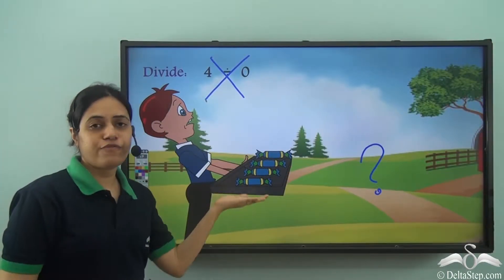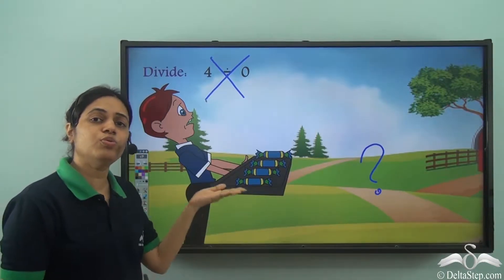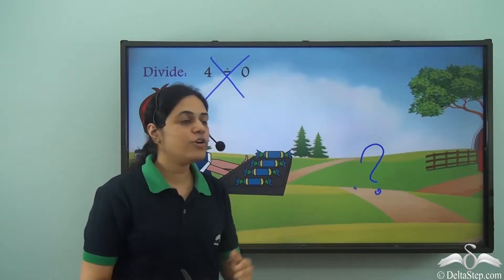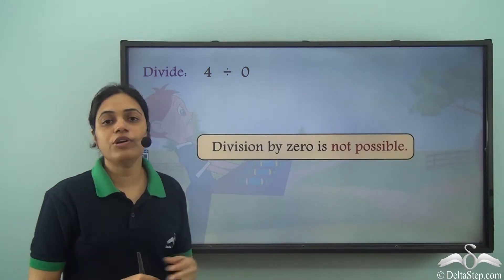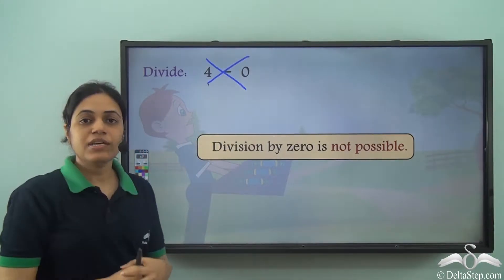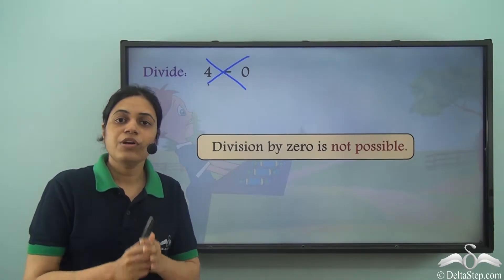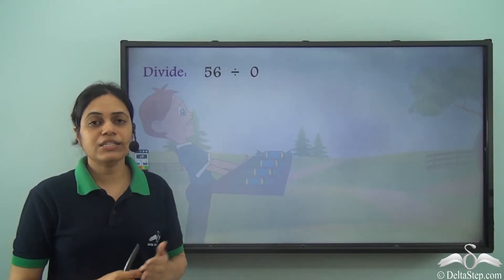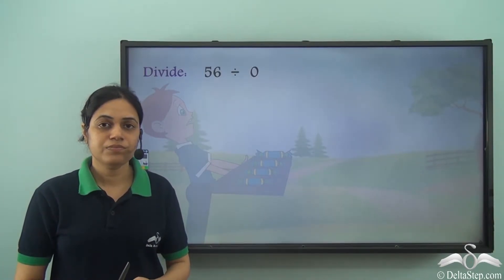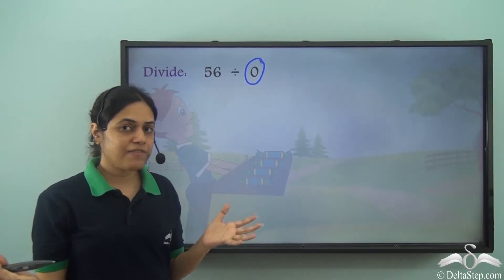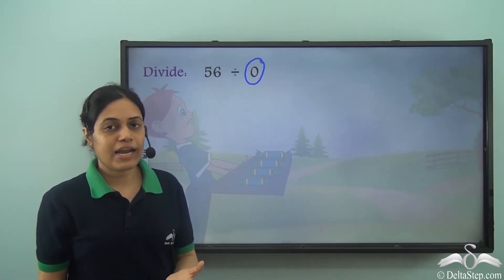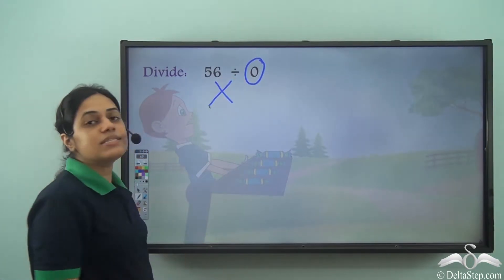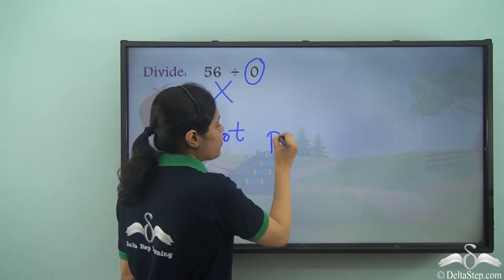In fact, if Rohan had five, six, or any number of toffees — even two or three — division by zero is not possible. I cannot divide any number, however small or big, by zero. So what is 56 divided by zero? The divisor is zero. If I have 56 of something, can I divide it among zero people? No, I cannot. So this is not possible — division by zero is not possible.